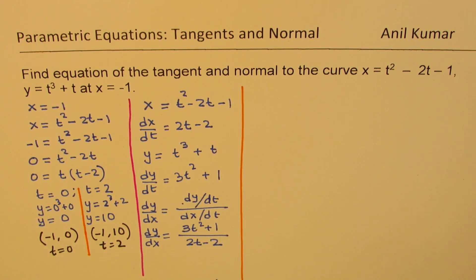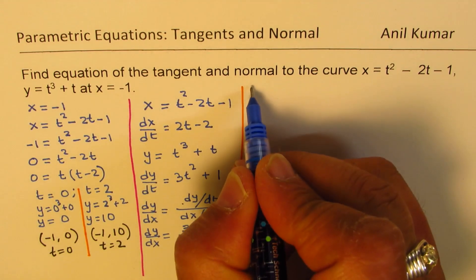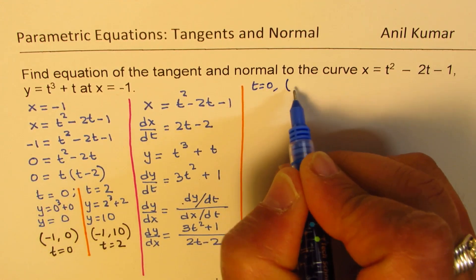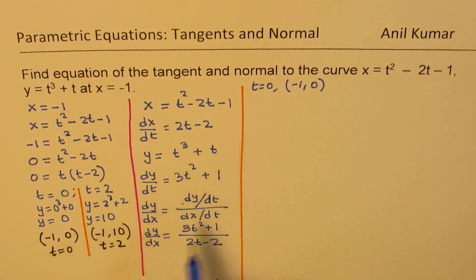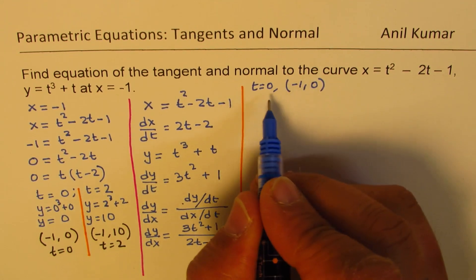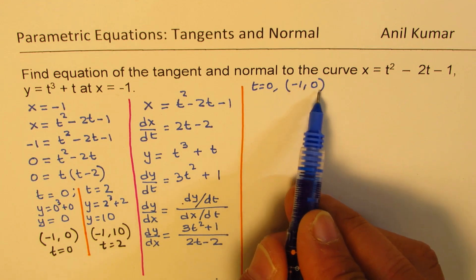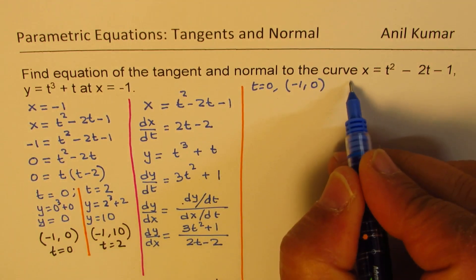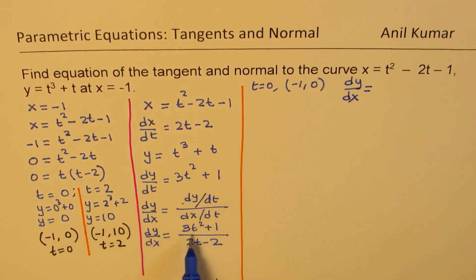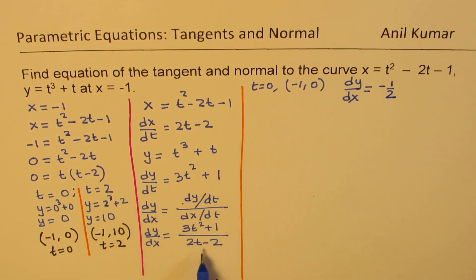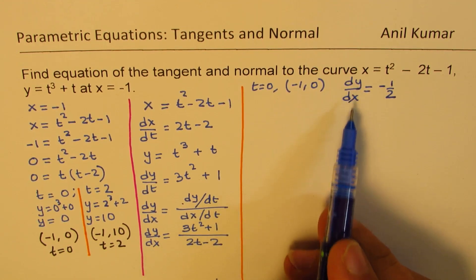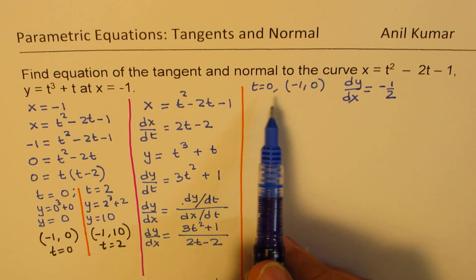We need to find the equation of tangent and normal at two different points. For the first condition, t equals 0, the point is (minus 1, 0). At t equals 0, dy/dx equals 1 over negative 2. Substituting into the derivative expression, we get dy/dx equals minus one half.